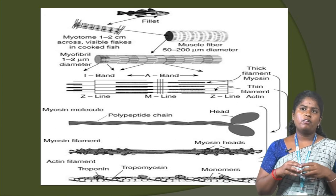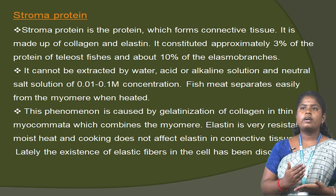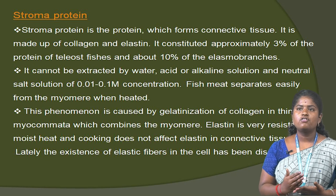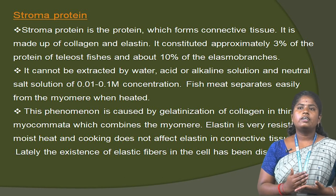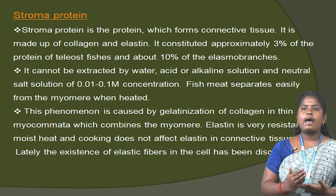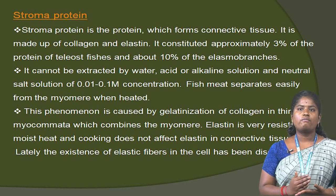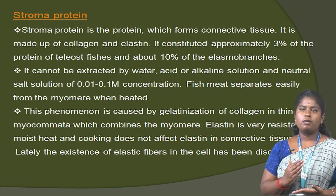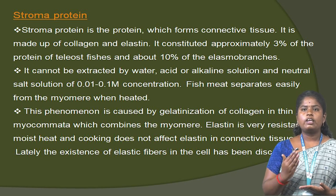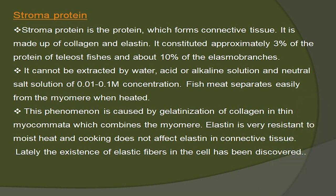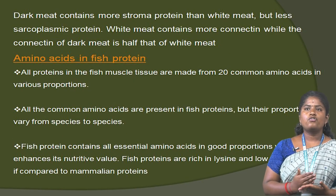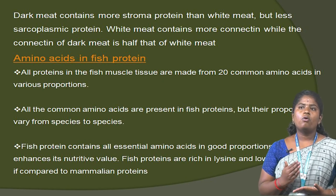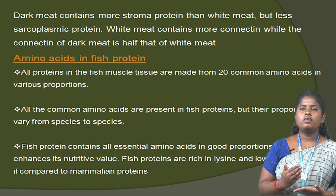Stromoprotein is the protein that forms the connective tissue. It is made up of collagen and elastin, constituting approximately 3% of the protein of teleost fishes, and about 10% in elasmobranch species. It cannot be extracted by water, acid, alkaline solution or neutral salt solution at 0.01 to 0.1 concentration. Fish meat separates easily from myomers when heated, a phenomenon caused by the gelatinization of collagen. Elastin is very resistant to heat and cooking does not affect elastin in connective tissue. Dark meat contains more stromoprotein than white meat but less sarcoplasmic protein.